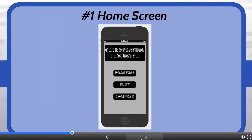The home screen of the app will just have the title of the name of the app, which is Orthographic Projector. Then it'll give the user three different options: one being to practice and learn, the second one being to play the game, and finally, the third one to compete against other users.